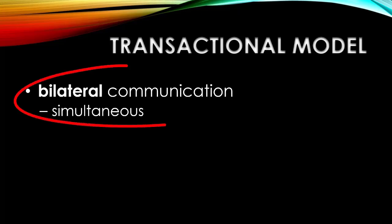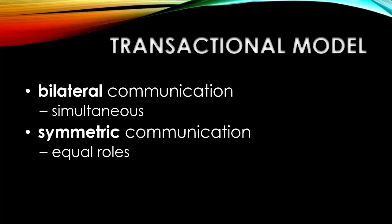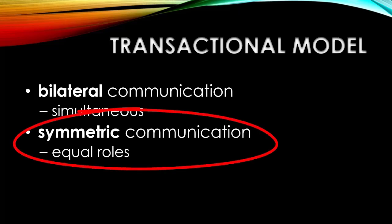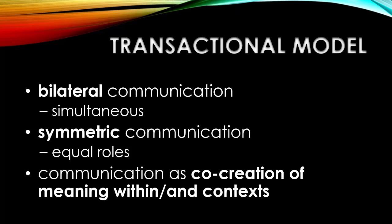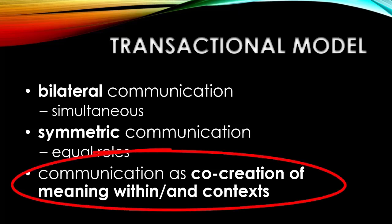So when we look at the transactional model, we can see some important similarities and differences with the interactional model. First, it's bilateral communication — it's two-way, just like the interactional model — except that instead of taking turns, this is communication that is simultaneous; we're both communicating at the same time. This is symmetric communication, like the interactional model, in which both parties have equally important roles. And this communication is not an exchange of individual meanings taking turns, but a co-creation of meaning — we're working together in this communication act within certain contexts, and we're doing communication that is also transformative of these contexts at the same time.